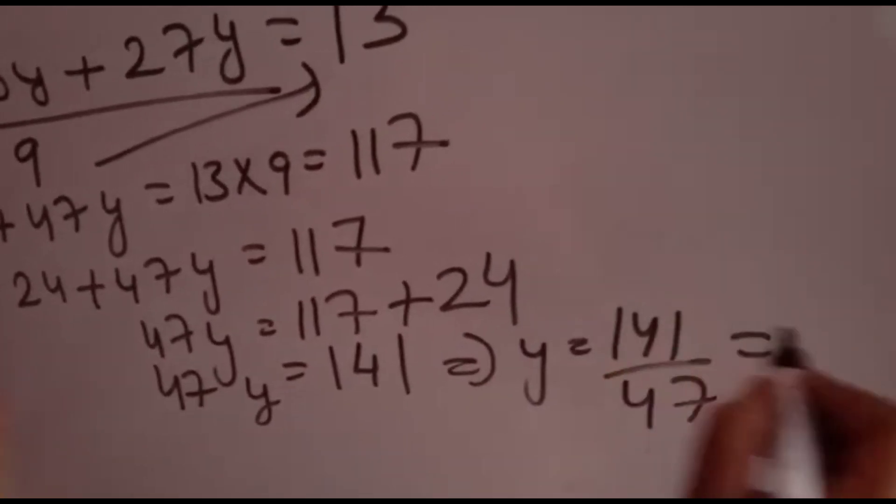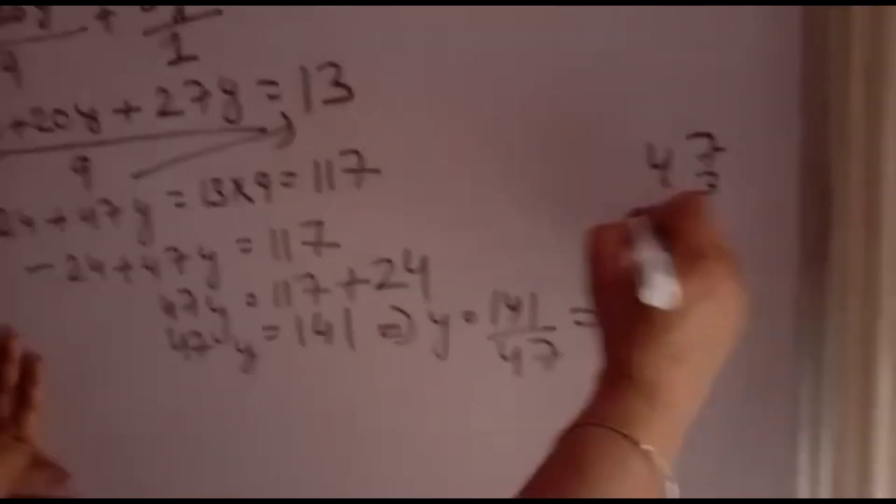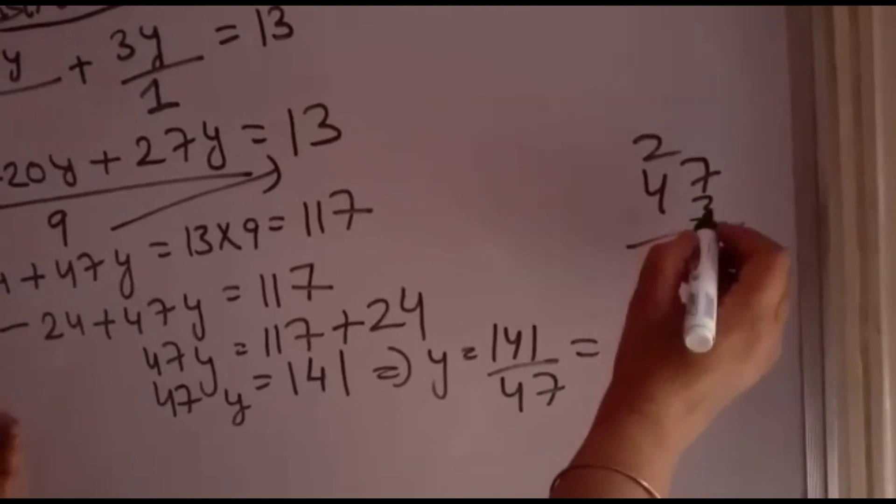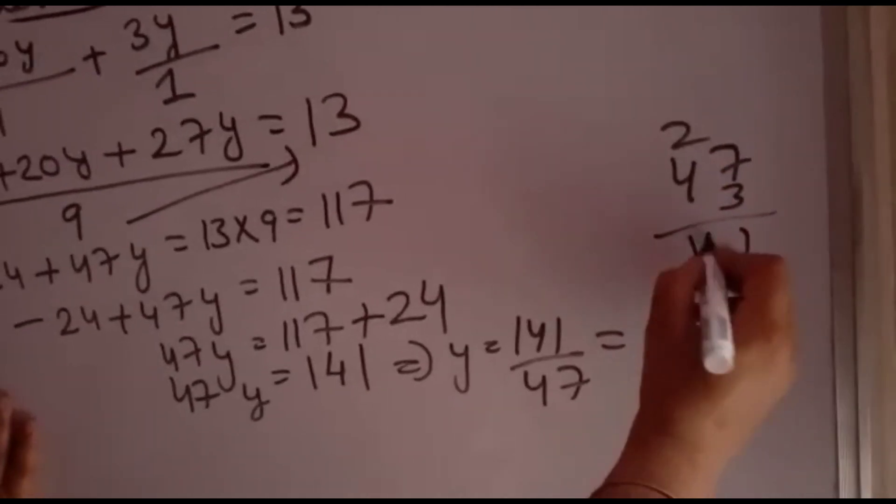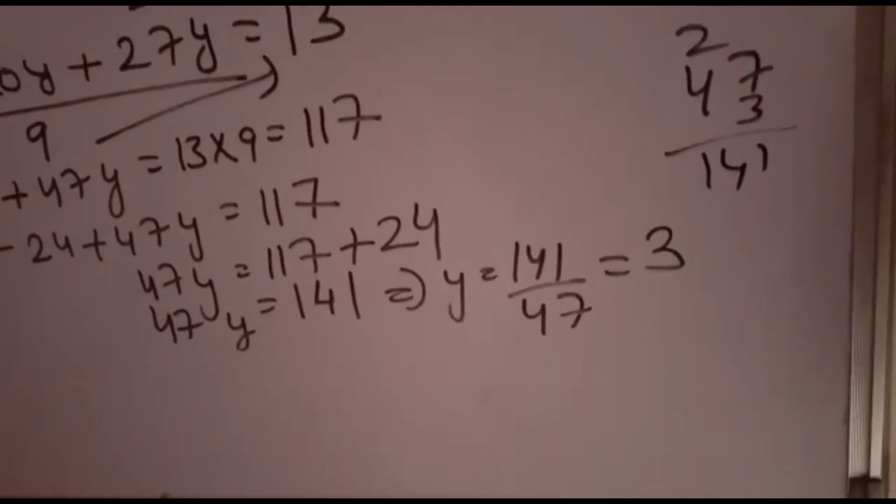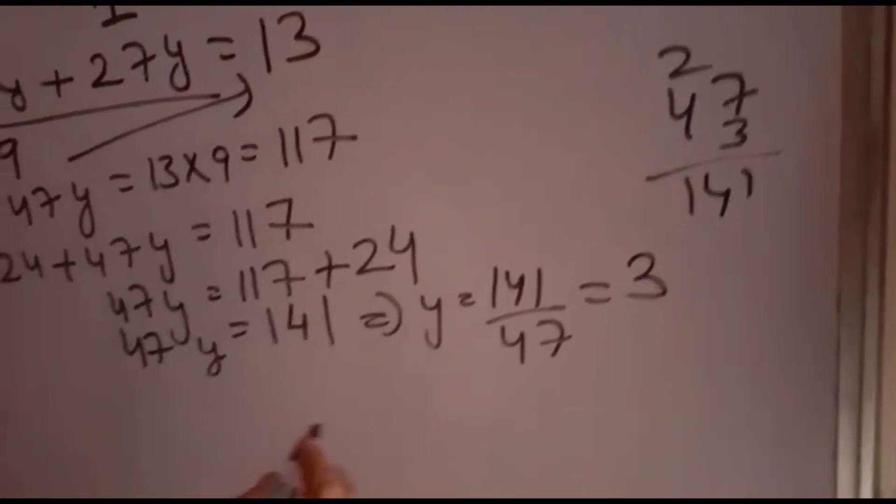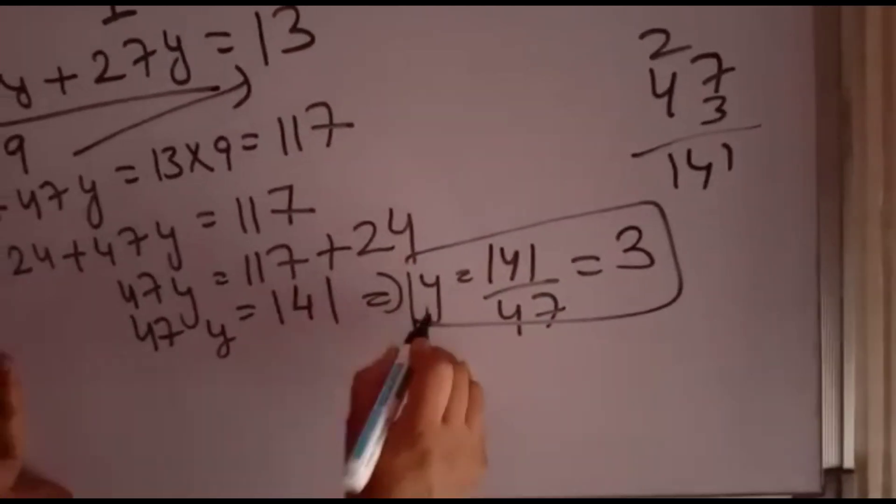47 times 3 is 141. You can multiply and see, 7 times 3 is 21, 4 times 12 is 144. So you can cut by 3. You will cut by 3 and you will get y equal to 3. y value is 3.